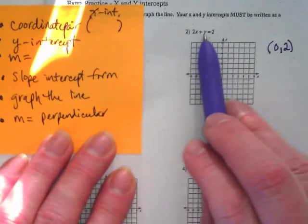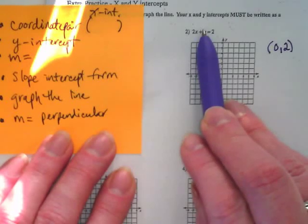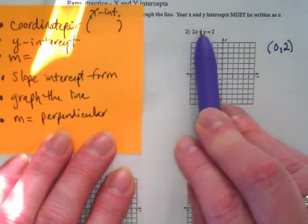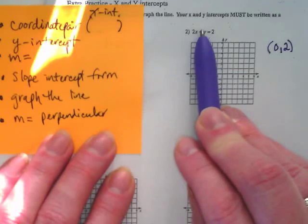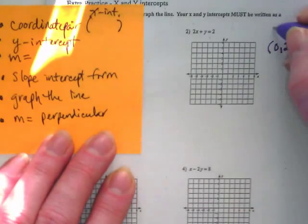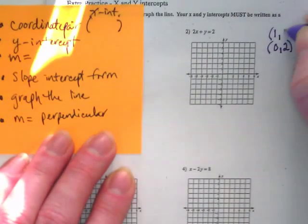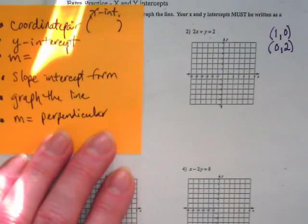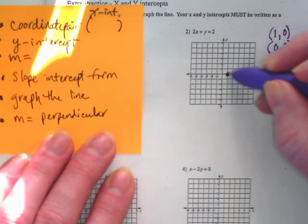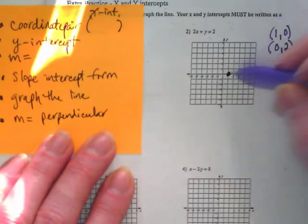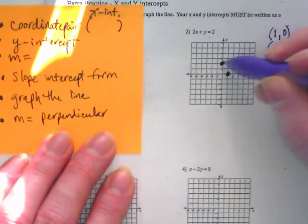If I put a zero in for the y, that leaves you with two x equals two. How do I get the x by itself? Divide by two. So what does my x equal? One, comma, zero. That's when I put in a zero for the y. That means that this is my y-intercept, and this is my x-intercept.